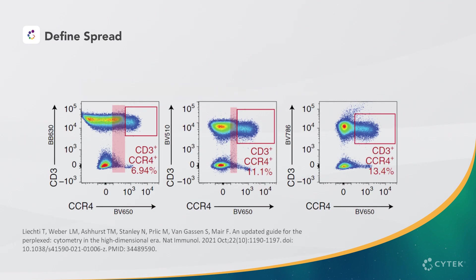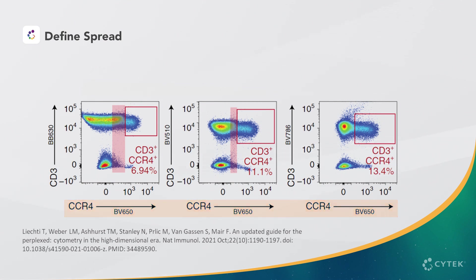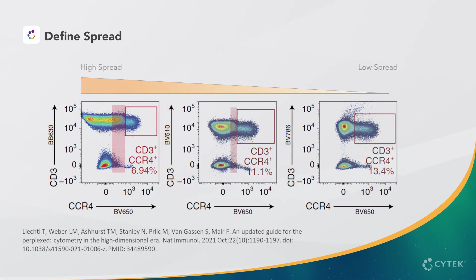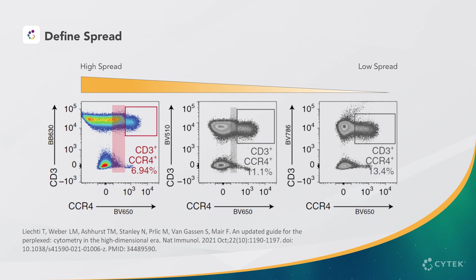Looking at this published example, we can see how the resolution of CCR4 on BV650 is impacted by CD3 in three different fluorochromes. When there is a large amount of spread, the resolution of the CD3 CCR4 double positive population is severely impacted. When the spread of CD3 is minimal, the CD3 CCR4 double positive population is well resolved.